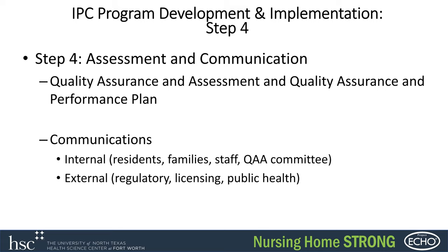The last step: after your risk assessment, policies and procedures, rounding, and surveillance tracking — especially for those things marked as high risk — you need to make sure you're doing assessment and communication. That has a lot to do with QAA and QAPI — the quality assessment and assurance committee. You put in a QAPI plan for process improvement: how are you going to improve an identified issue, and how are you going to lower those high-risk factors you can control?